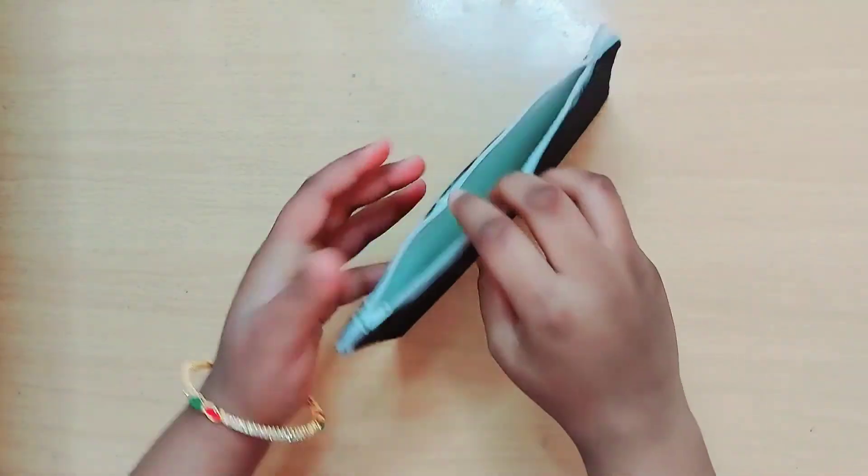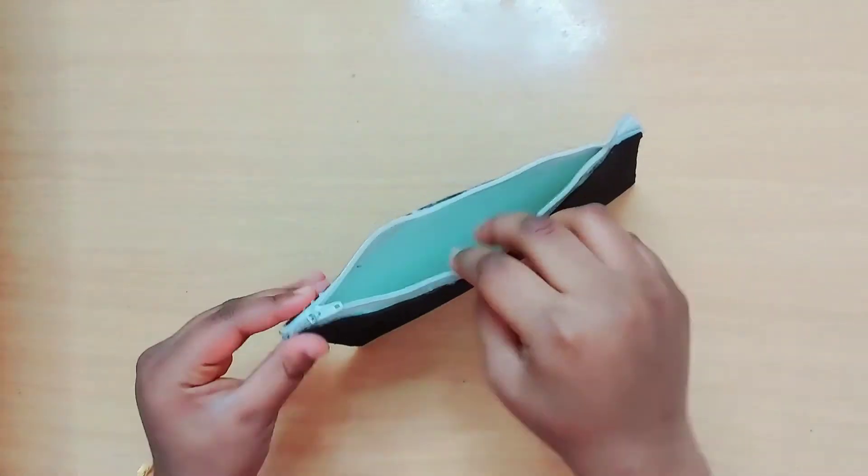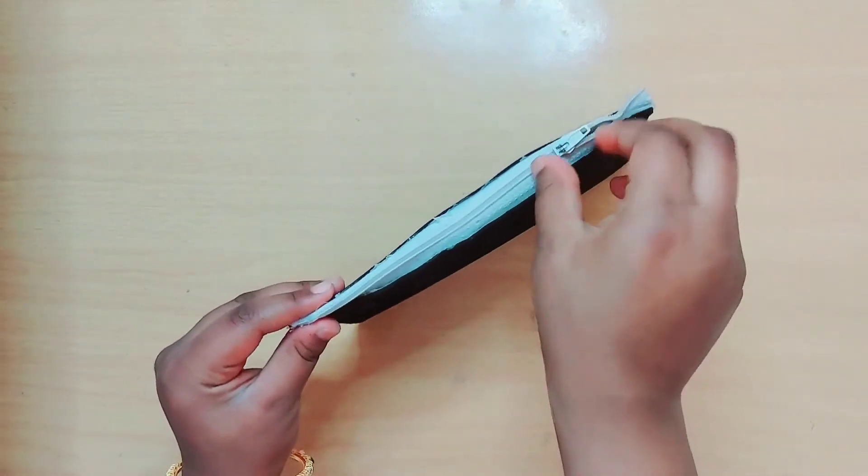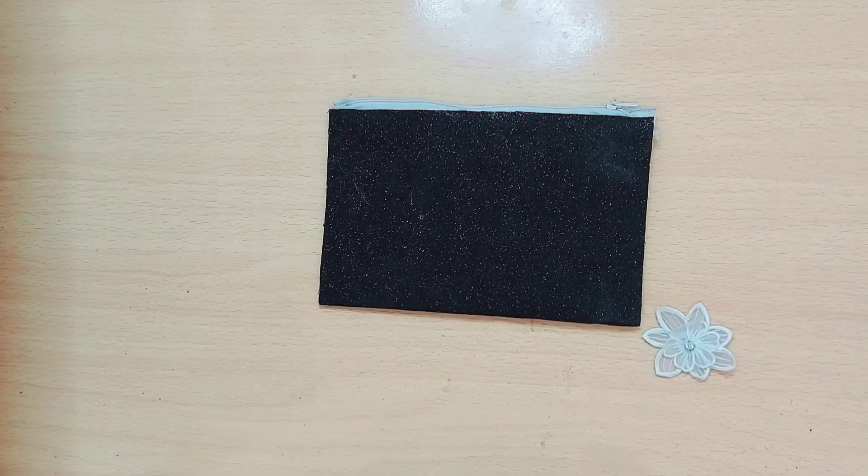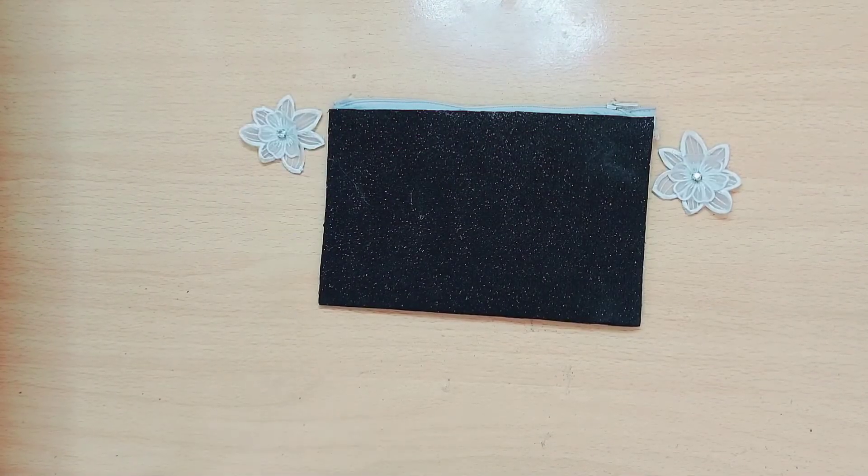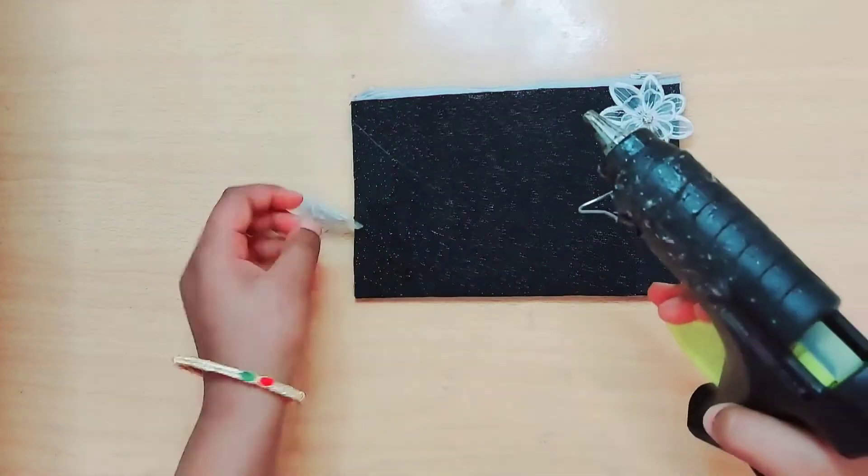Now our pouch is almost done. We have to complete it by doing some decorations. Here I have two types of floss for doing the extra decoration work.